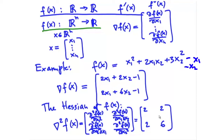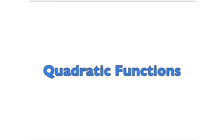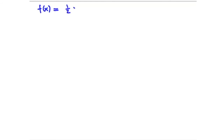Since we've started talking about quadratic functions, let's discuss them in more detail. We usually write quadratic functions in the form f(x) = ½ xᵀQx + cᵀx. You could also add a constant term, but for optimization we can always ignore constants in the objective. We use the coefficient of one-half here, and the reason for that will be explained shortly.